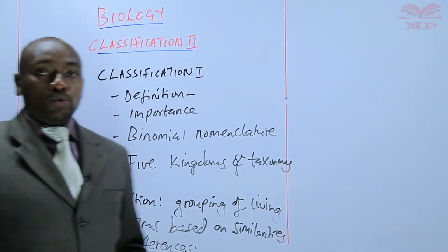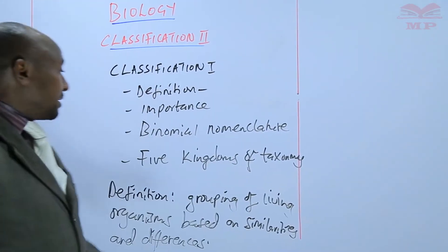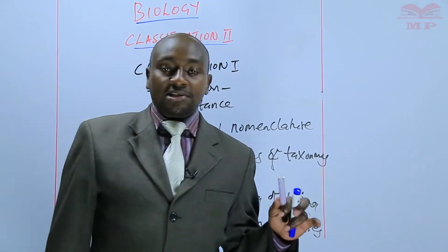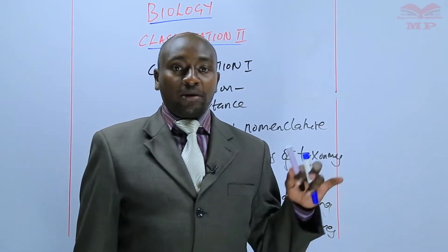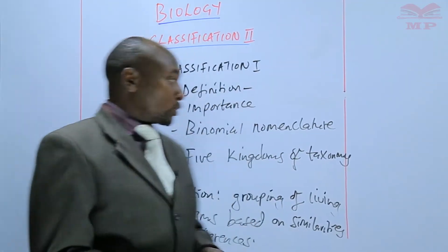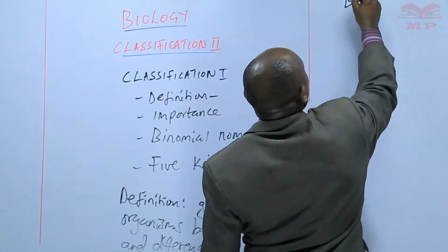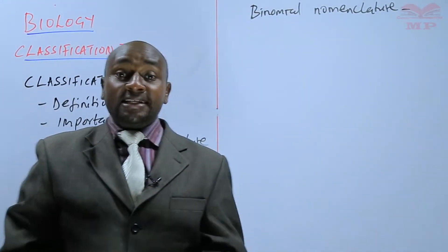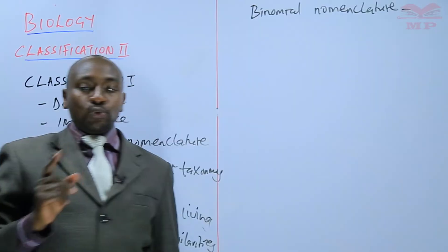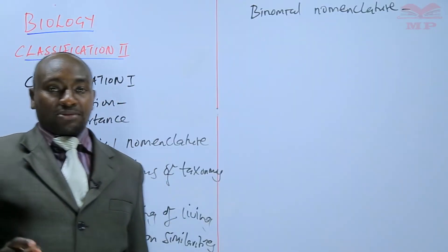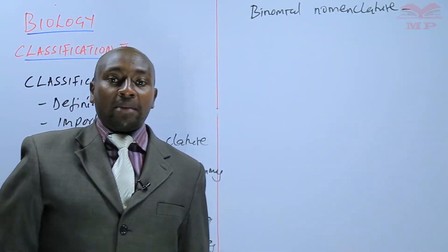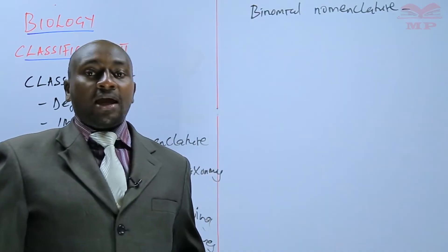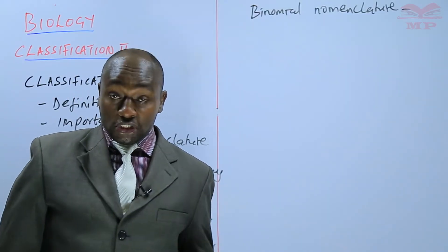The other term I would want us to explain is binomial nomenclature, which is the foundation or the principle of classification. Binomial nomenclature is the assigning of two scientific names to an organism, whereby the first name is the genus name and the second name is the species name.